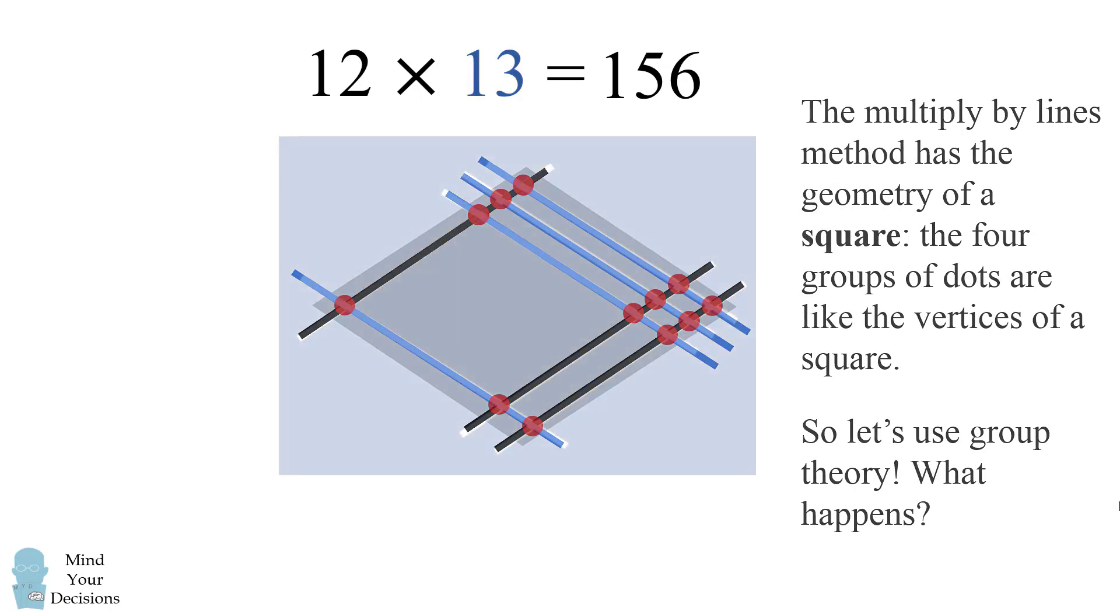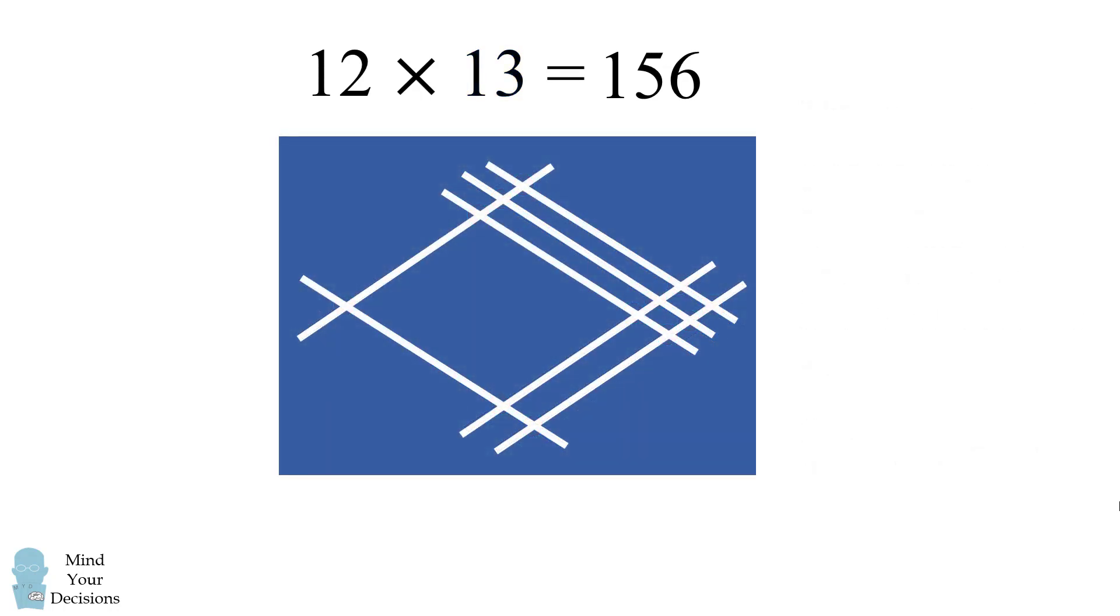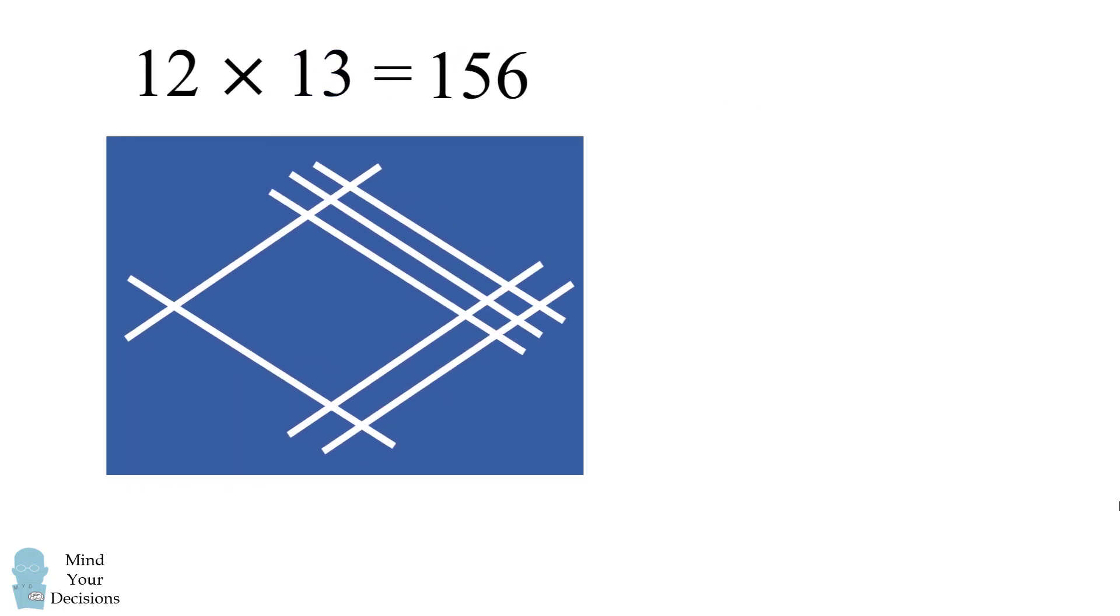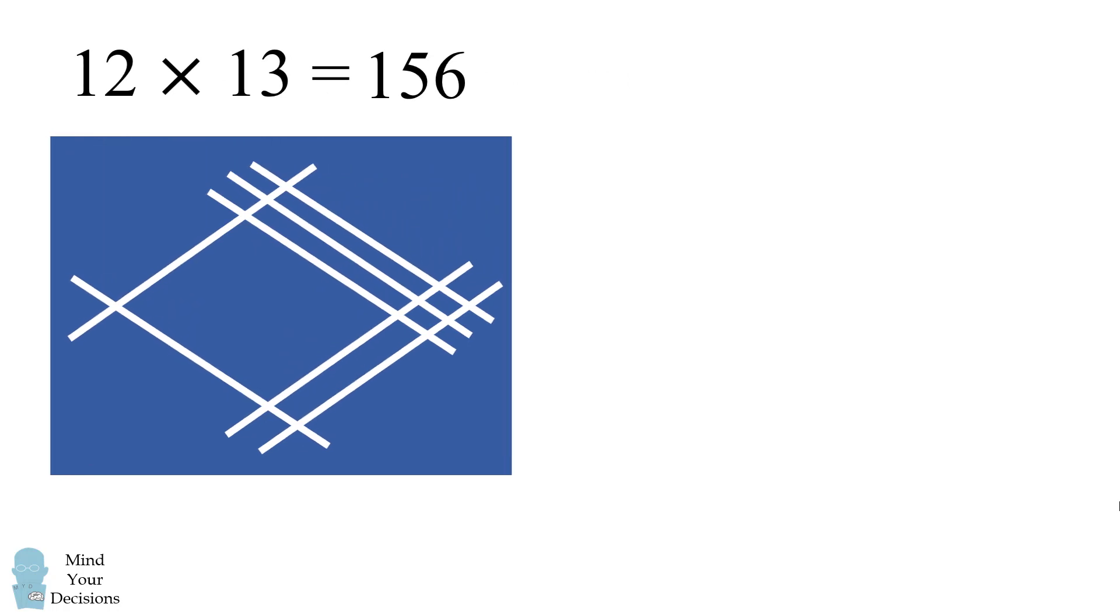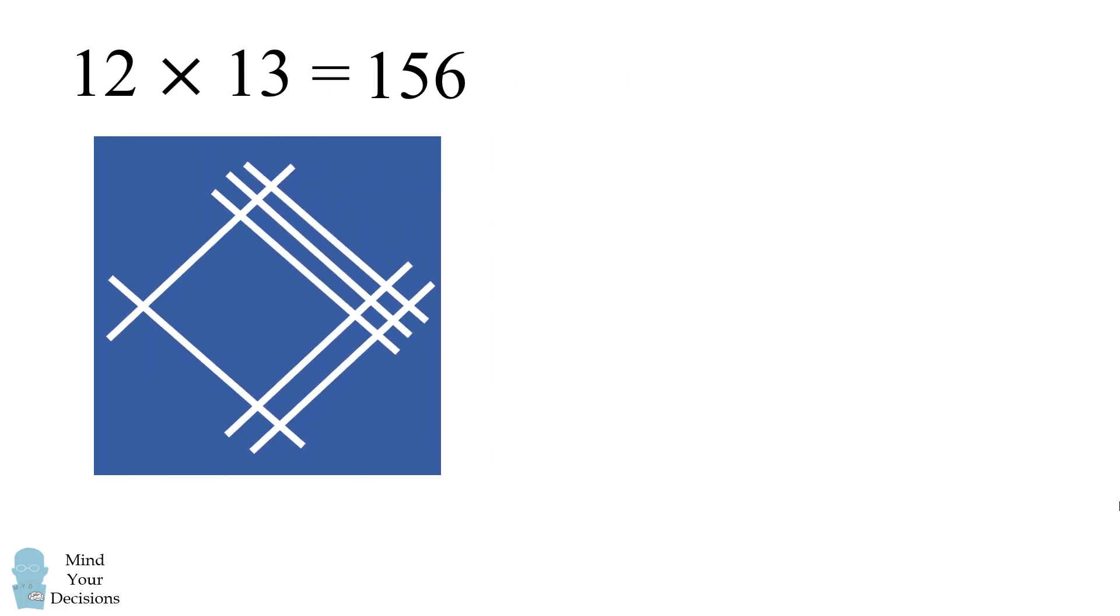First I'm going to change the diagram into a rectangle. And then I'm going to smush it together so that we have a square. Now let's apply these symmetries of a square to this diagram.